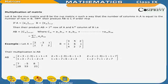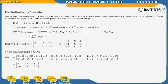Multiplication of matrices: Let A be an m by n matrix and B be an n by p matrix, such that the number of columns in A is equal to the number of rows in B. Then the product AB is C of order m by p. If A equals Aij of order m by n and B equals Bjk of order n by p, then the product AB equals the matrix Cik of order m by p, where Cik equals Ai1 times B1k plus Ai2 times B2k plus so on up to Ain times Bnk, which equals the summation of Aij times Bjk, where j varies from 1 to n.